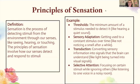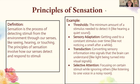Principles of sensation: sensation is the process of detecting stimuli from the environment through your senses, like seeing, hearing, or touching. The principles of sensation involve how our senses detect and respond to stimuli. Key examples include: thresholds — the minimum amount of stimulus needed to detect it, like hearing a quiet sound; sensory adaptation — getting used to a constant stimulus over time, like not noticing a smell after a while; transduction — converting sensory information into signals the brain can understand, like light being turned into visual signals; and selective attention — focusing on certain stimuli while ignoring others, like listening to one voice in a noisy room.